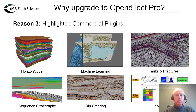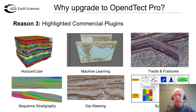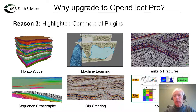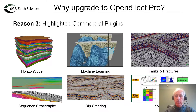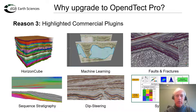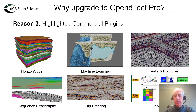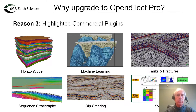Let's look at some of the highlighted commercial plugins. There's the Horizon Cube, the global seismic interpretation technique. There's machine learning with access to the latest deep learning algorithms, including all the neural network functionality we have had from the start. Then there's faults and fractures with thin fault likelihood, fault likelihood, various filters, unique attributes like basement fractures, and automatic fault plane extraction. We have a sequence stratigraphic plugin that runs on top of the Horizon Cube, and a dip steering plugin for structurally oriented filtering and attribute calculations. And then there's Sintrock — a forward modeling and inversion package that can be used for matching stochastically simulated pseudo-wells against real seismic. The same stochastically simulated pseudo-wells can also be used to train machine learning models.